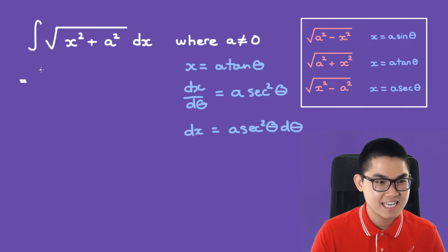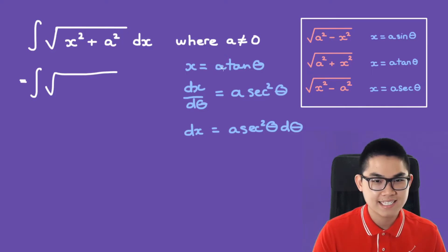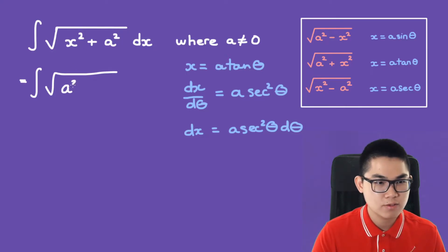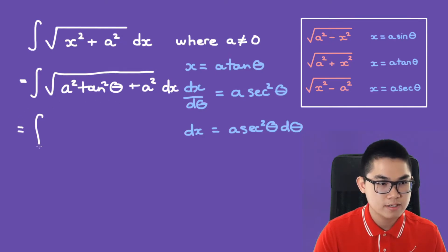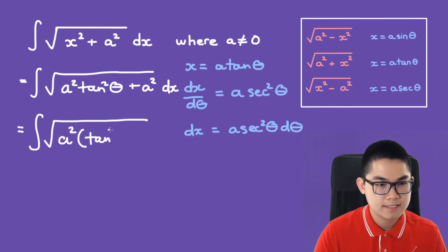This gives us the integral of x squared — and x is a times tan, so x squared will be a squared times tan squared — plus a squared dx. Let's factor out the a squared, so we get the integral of the square root of a squared times tan squared plus 1 dx.